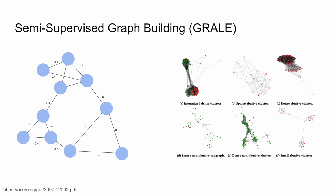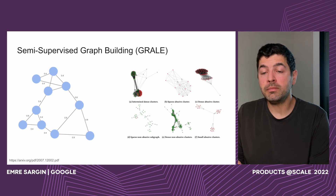Going back to adversarial actors, it's important to have a system that can understand relationships between creators to detect those who are trying to evade detection algorithms through circumvention and coordination. One approach is building a semi-supervised graph, where the goal is to predict the probability that a pair of creators who share an edge are both policy-violative. On the left is a toy example where edges connecting clicky nodes have a high probability of being violative. On the right are examples from real graphs, where red dots represent violative creators and green ones represent non-violative creators. The algorithm can effectively detect violative creators in both sparsely and densely connected networks, as well as ones intermixed with non-violative creators.